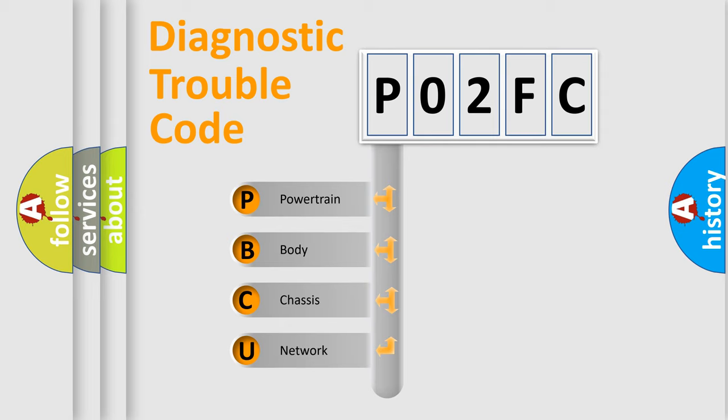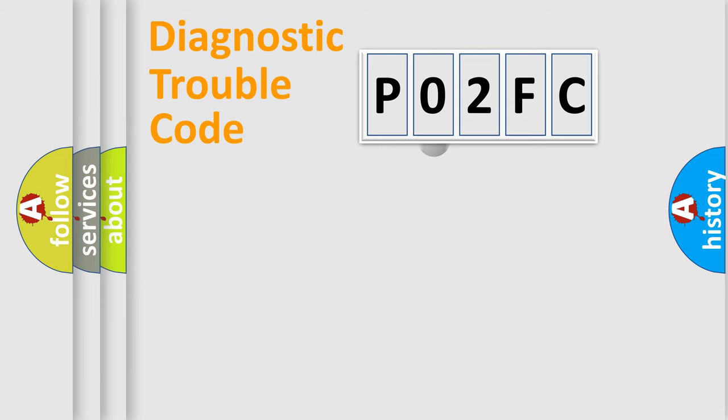We divide the electric system of the automobile into four basic units: Powertrain, Body, Chassis, and Network. This distribution is defined in the first character code.